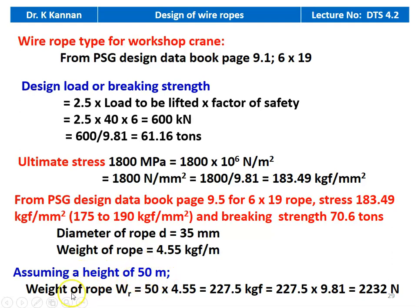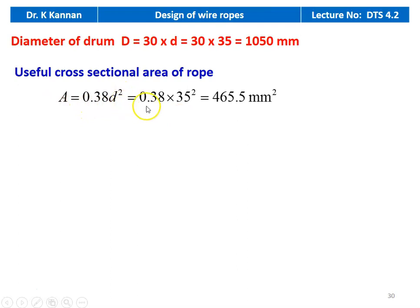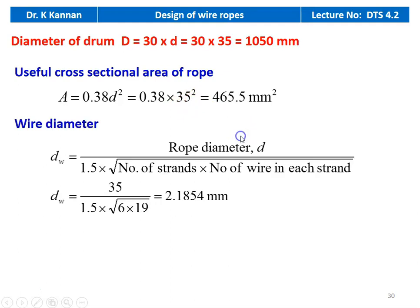Assuming a height of 50 meters, the weight of the rope W_R equal to 50 into 4.55 equal to 227.5 kilogram force, equal to 227.5 into 9.81 equal to 2232 newton. Diameter of the drum equals 30 into 35 equal to 1050 millimeter. The useful cross-section area equals 0.38 into 35 squared equal to 465.5 millimeter squared. Wire diameter D_w equal to 35 divided by 1.5 into square root of 6×19 equal to 2.1854 millimeter.